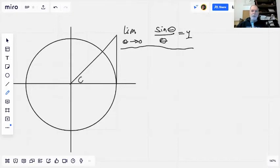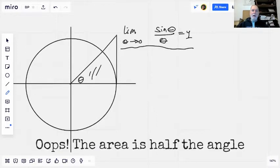This is theta right here. Now I want to make an observation that this angle theta is equal to one half of the area of this sector.